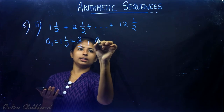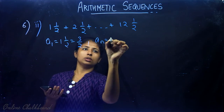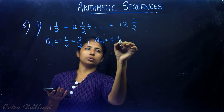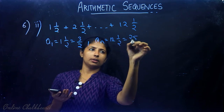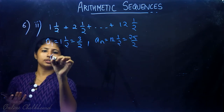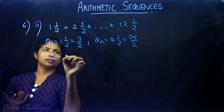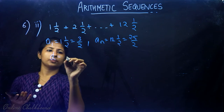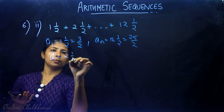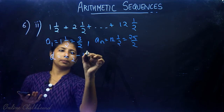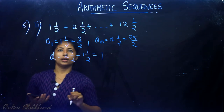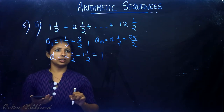The common difference d equals 2½ minus 1½, which equals 1. So the common difference is 1. Now we need to find n and calculate the sum.